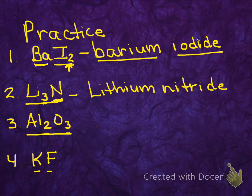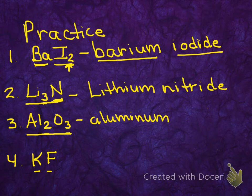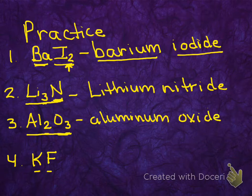Example number three, Al2O3. Al is aluminum. O is oxygen. Again, we're going to change the ending to -ide, so oxide.